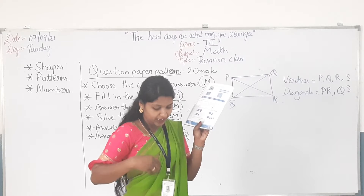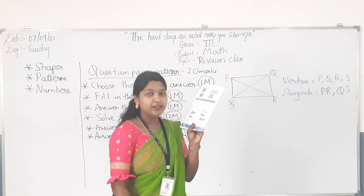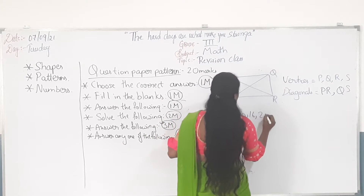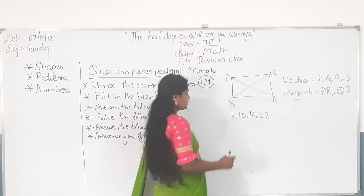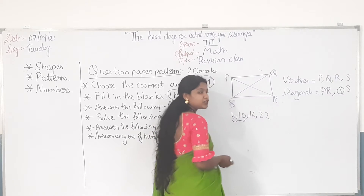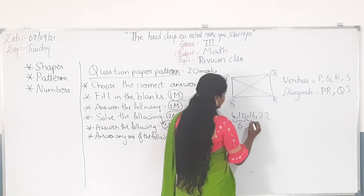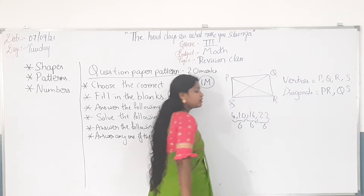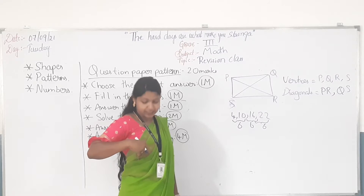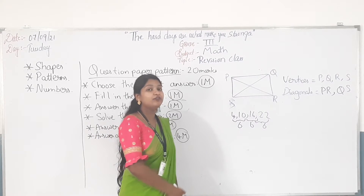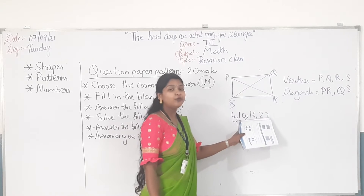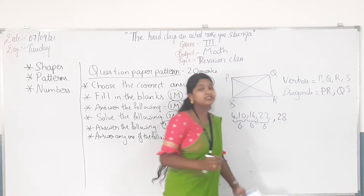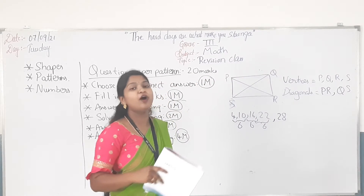6th question: which number will come next? The pattern given is 4, 10, 16, 22. What will be the next two numbers? First, find the difference between the first two numbers — the difference is 6. For 10 and 16, it is 6. From 16 to 22, it is 6. The difference between all consecutive numbers is 6. So the next number is 22 plus 6, which is 28. In this format only they will ask the questions, so please go through your workbook and practice today.